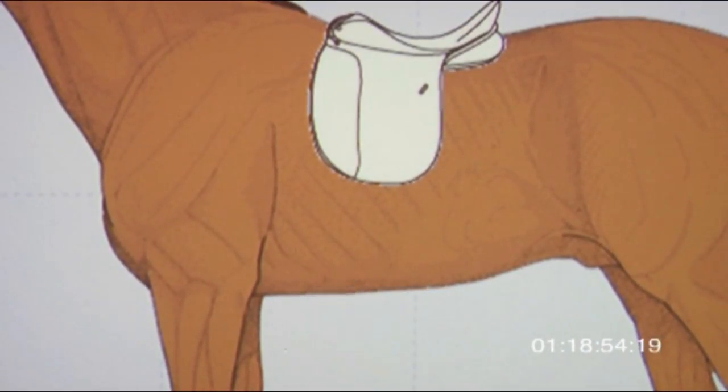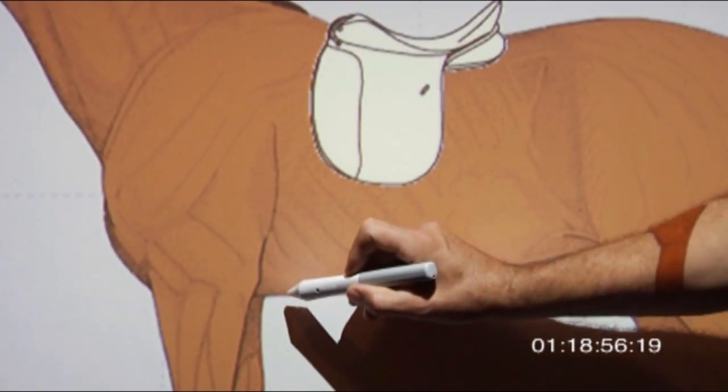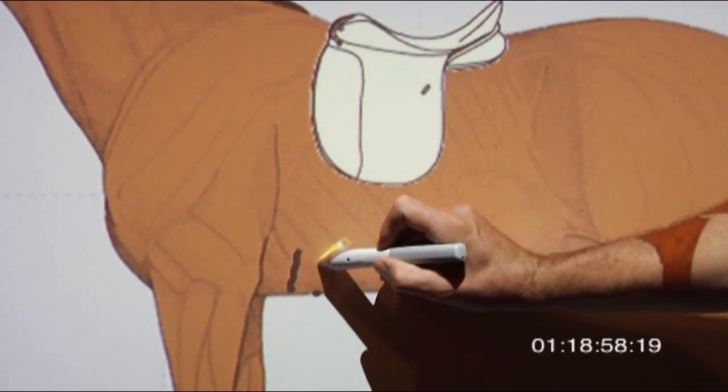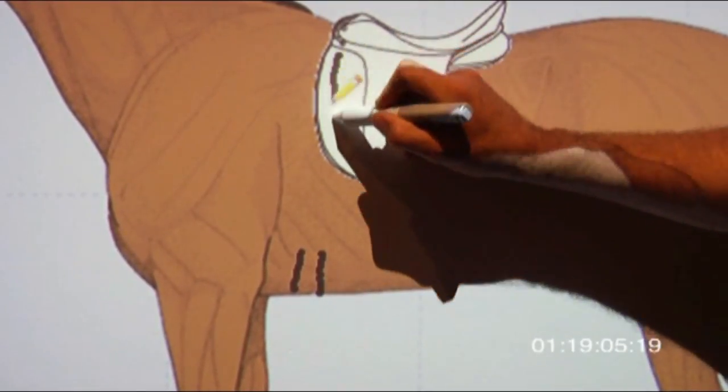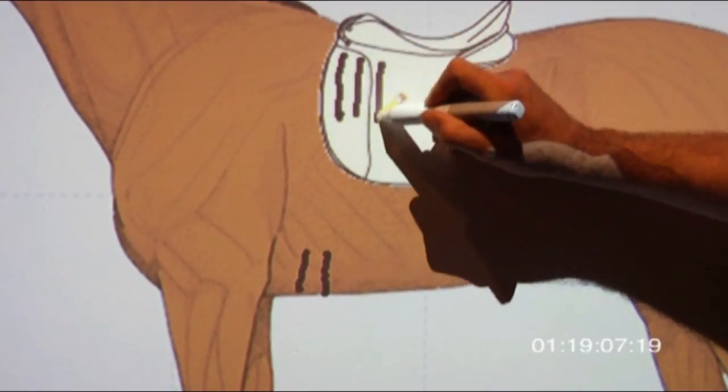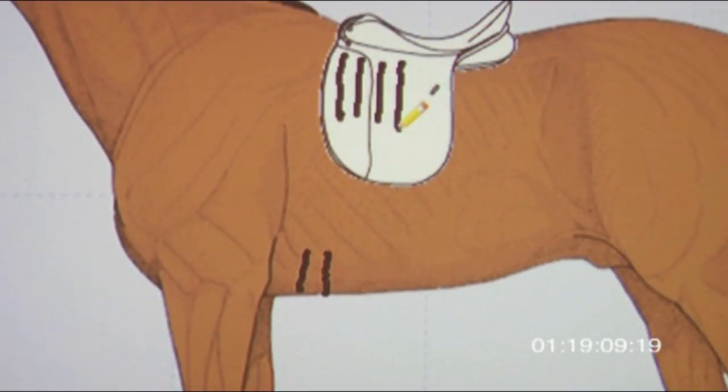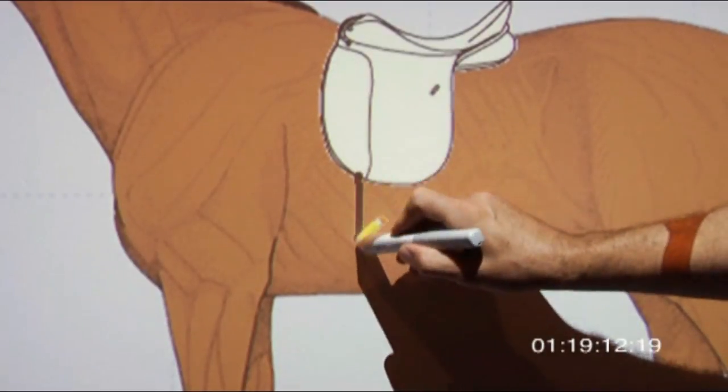So the girth should sit a hand width behind this area. The billets of your saddle - if it's a short billet system, you sometimes have four short billets, or some have long billets.